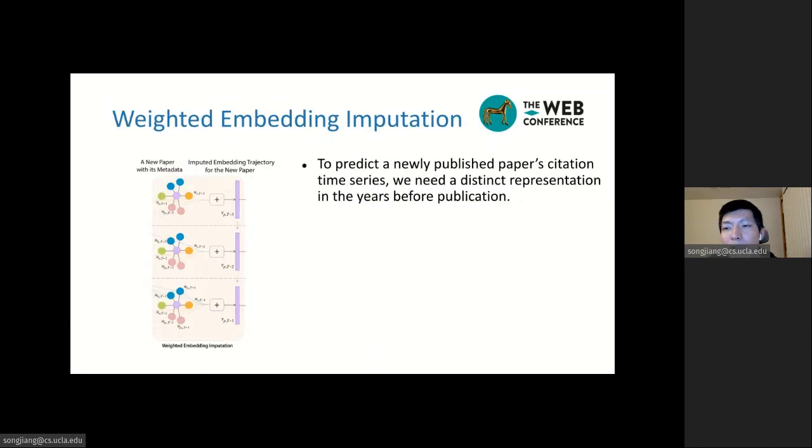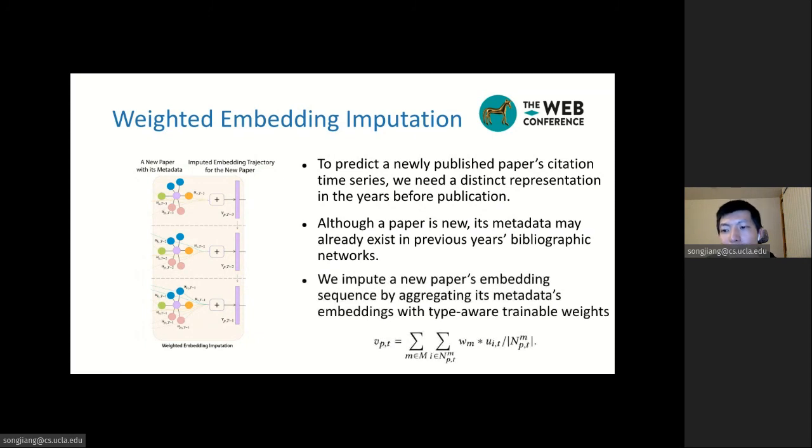Now we have the embedding for all nodes in the bibliographic network, and to predict a newly published paper's citation time series, we need a distinct representation in the years before publication for this new paper. To learn such an embedding, we must have some information of this new paper. Although a paper is new, its metadata may already exist in previous years' bibliographic networks. Therefore, we impute an embedding sequence for a new paper by aggregating the embedding of all its metadata. And here we also consider the metadata type with a trainable weight so that we can capture the different effect of the different metadata types.